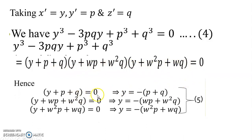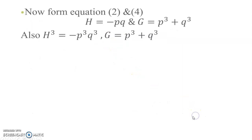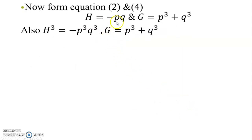The three roots of the reduced cubic are: y₁ = p + q, y₂ = ωp + ω²q, y₃ = ω²p + ωq. To find p and q, we need p³ + q³ = g and pq = h, so p³ and q³ are roots of a quadratic equation.